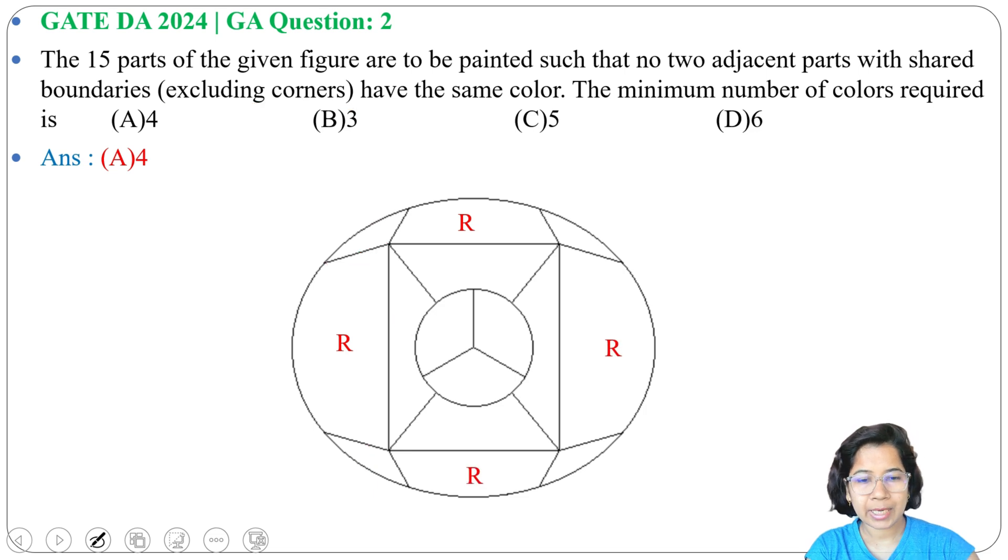After assigning these 4 red colors, red cannot be in these 4 corners as boundaries are shared, and red cannot be here as the boundary is shared. But red color can be in this circle, so we can assign red color to any one of these 3 parts.